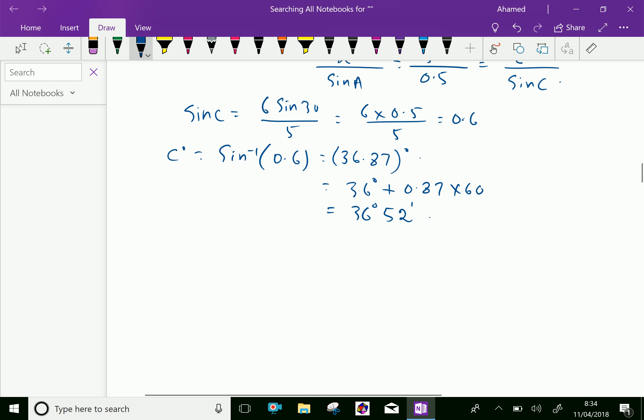which equals 36 degrees and 52 minutes approximately. Now we know that all angles in the triangle, a plus b plus c, equal 180 degrees.